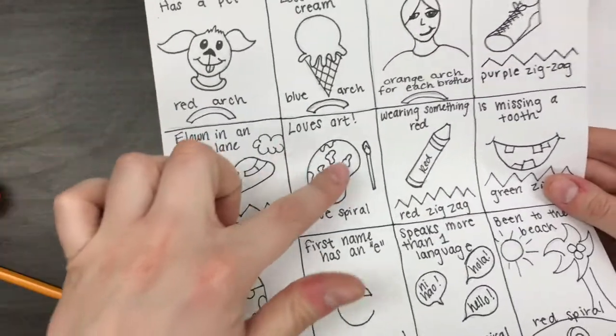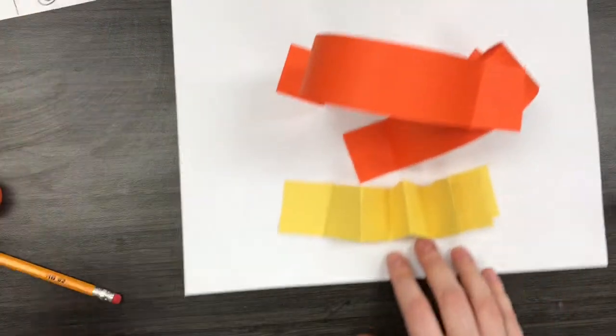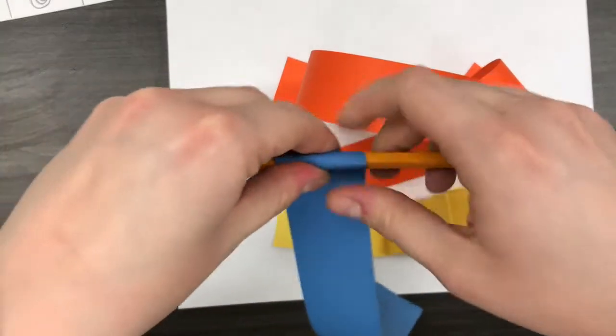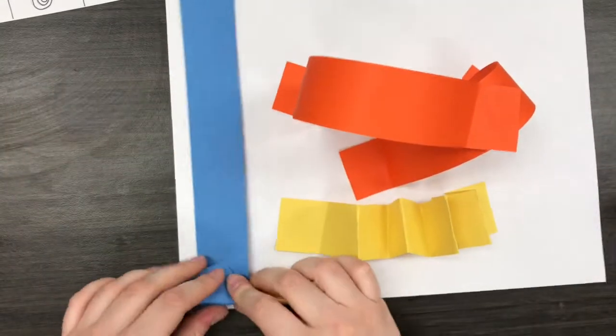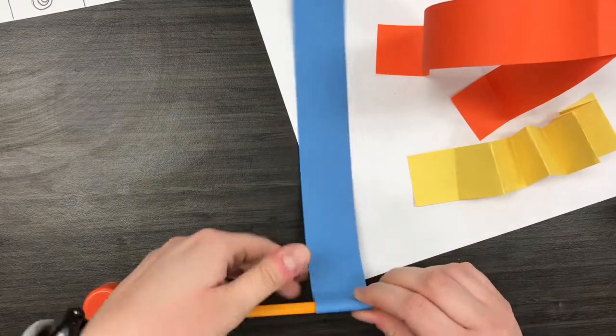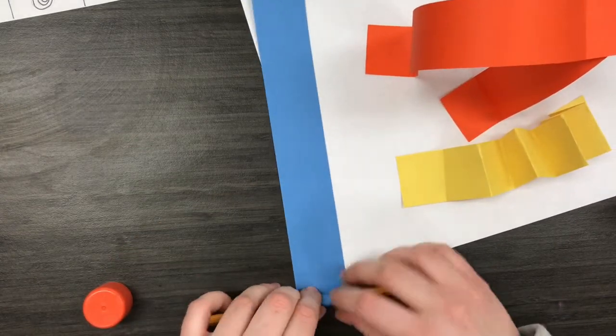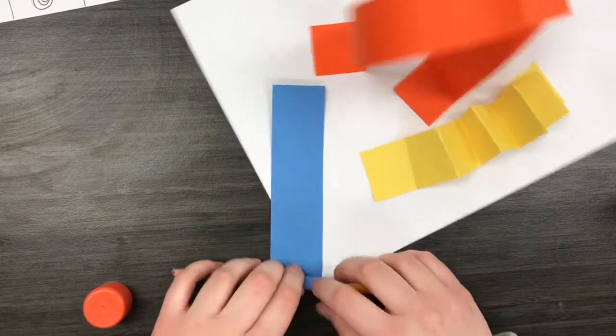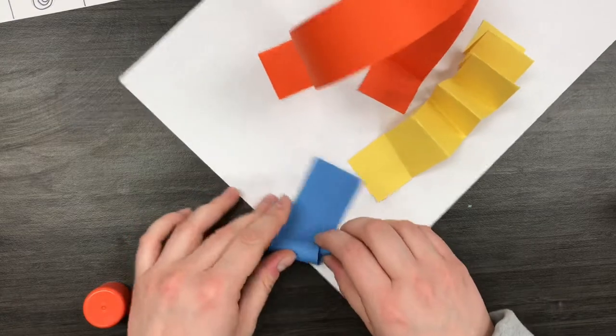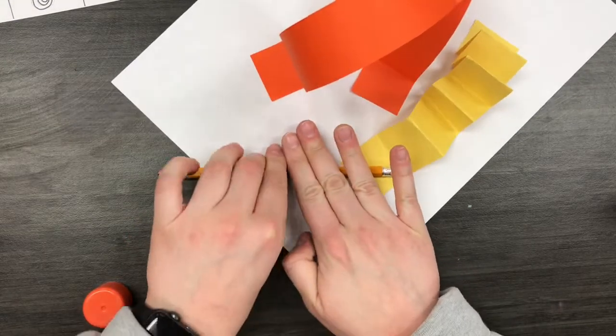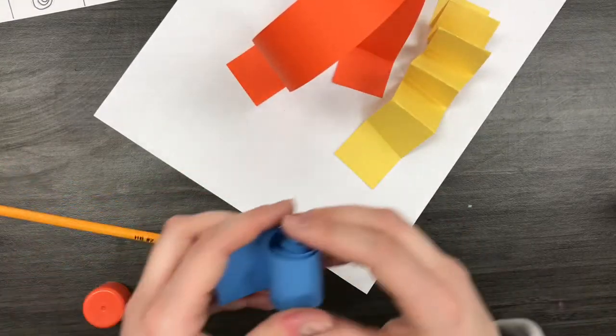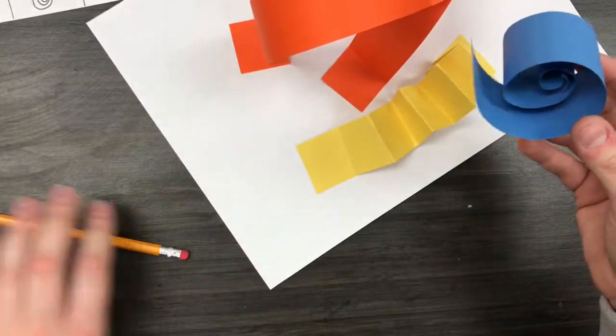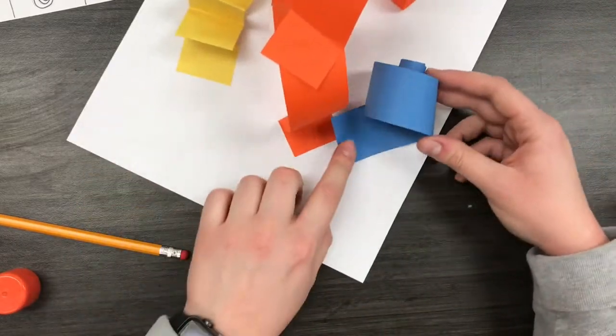Next, I'm going to choose, well of course I love art, so I am going to make a blue spiral. I'm going to stretch it out a little bit so I can see it, and then again, stick it where I want it.